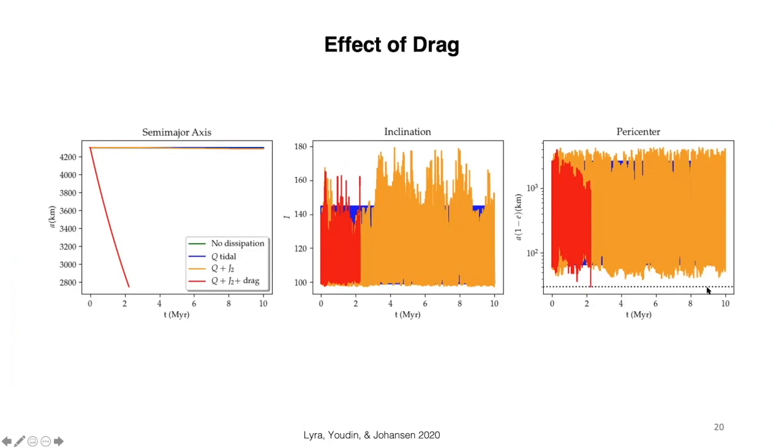semi-major axis is decreasing, eventually you can reach the distances where you would have contact between the two lobes. This dashed line here is 30 kilometers. That means the two bodies reach contact. So the Kozai oscillations alone cannot do it. The drag alone cannot do it. But when you combine Kozai-Lidov oscillations with the permanent quadrupole and with the drag force, you can reach contact.